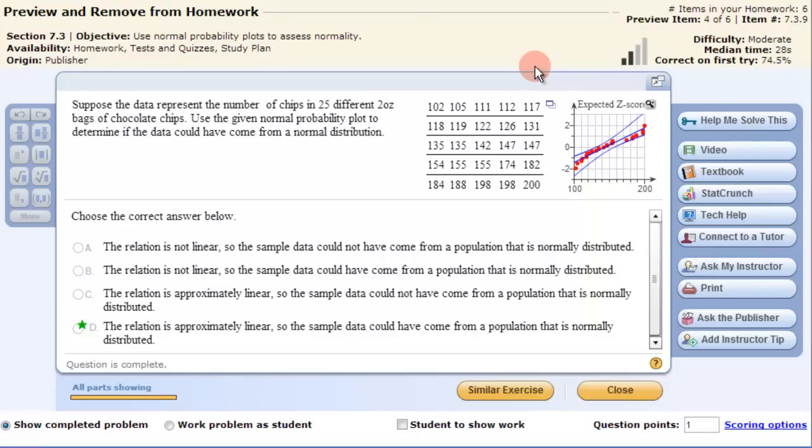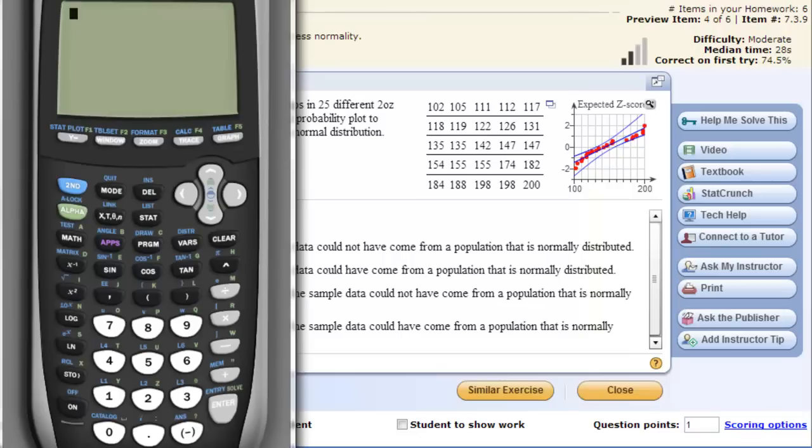In this video I'll show you how to use the TI calculator to make a probability plot so you can assess normality. Here's the information and what you need to do is you need to type that into the calculator.